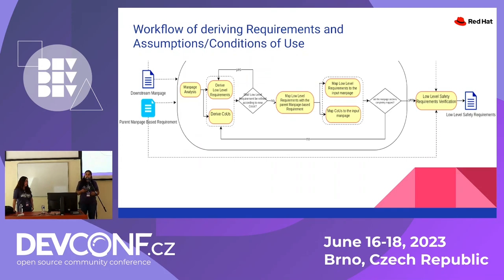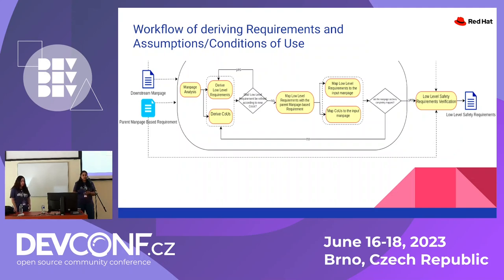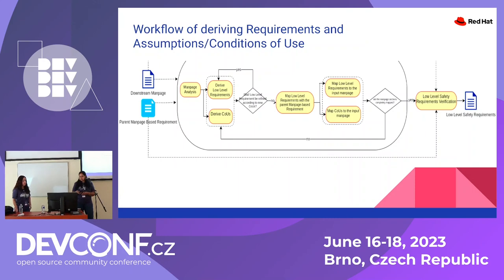Now, how do we derive the low-level requirements and the associated conditions of use? As Rachel previously said, we take reference from the man pages of the associated APIs that are in the safety scope. We analyze the man page and from it derive low-level requirements that are testable. There are also assumptions or conditions of use that come into picture when the fulfillment of these low-level safety requirements is dependent on context — for example, a requirement holds true only if the system is 64-bit, so that becomes the assumption of use. Then verification happens and we move forward.